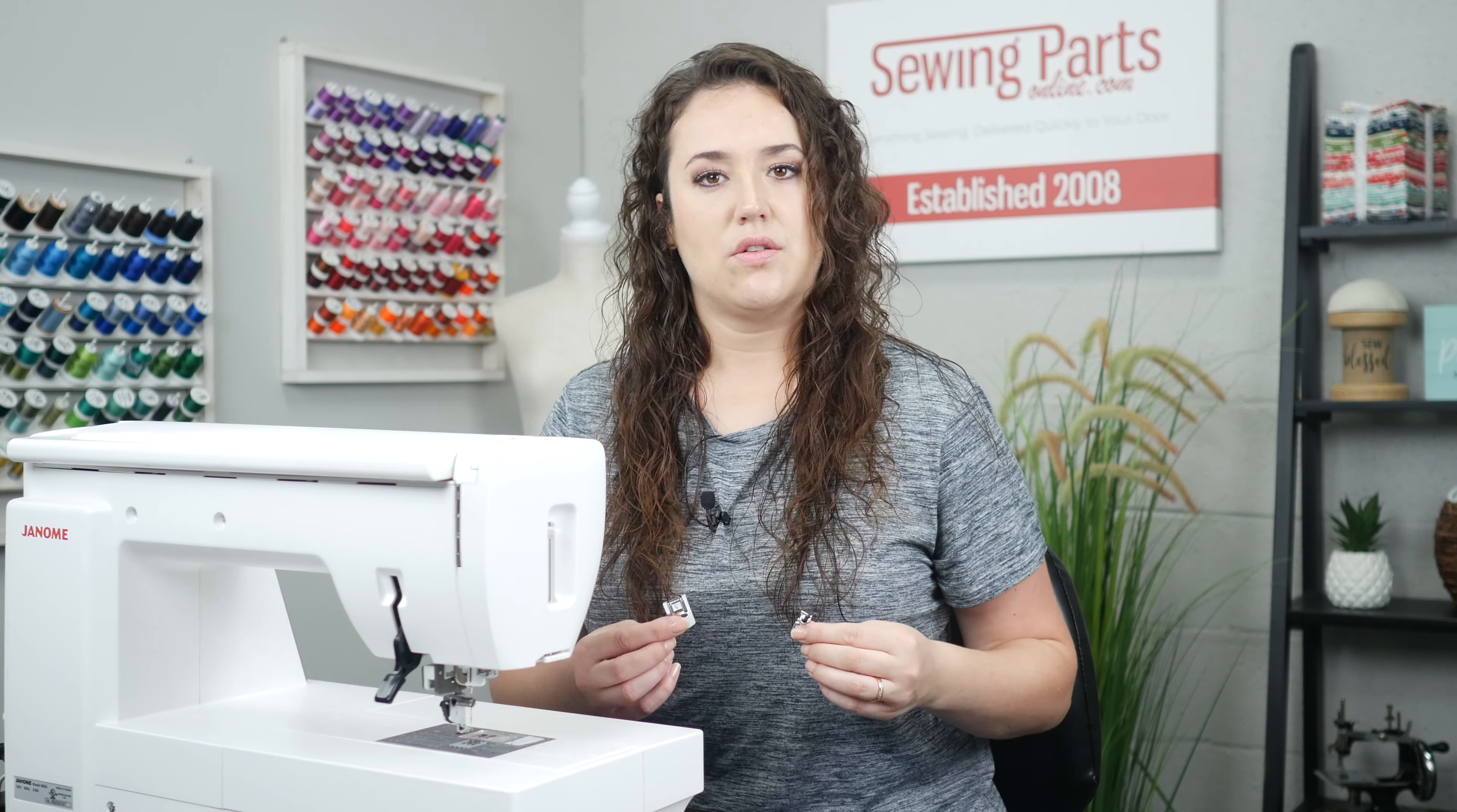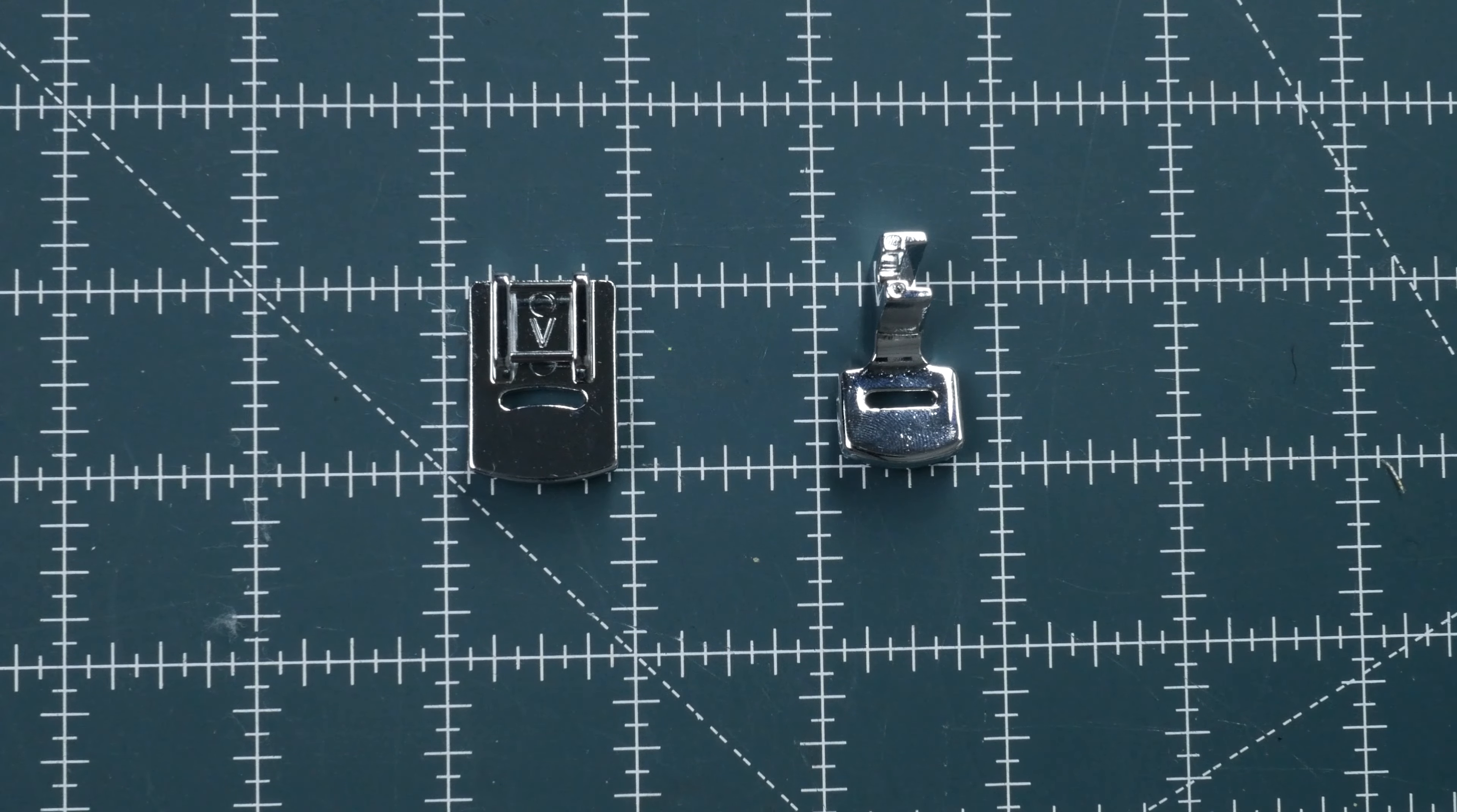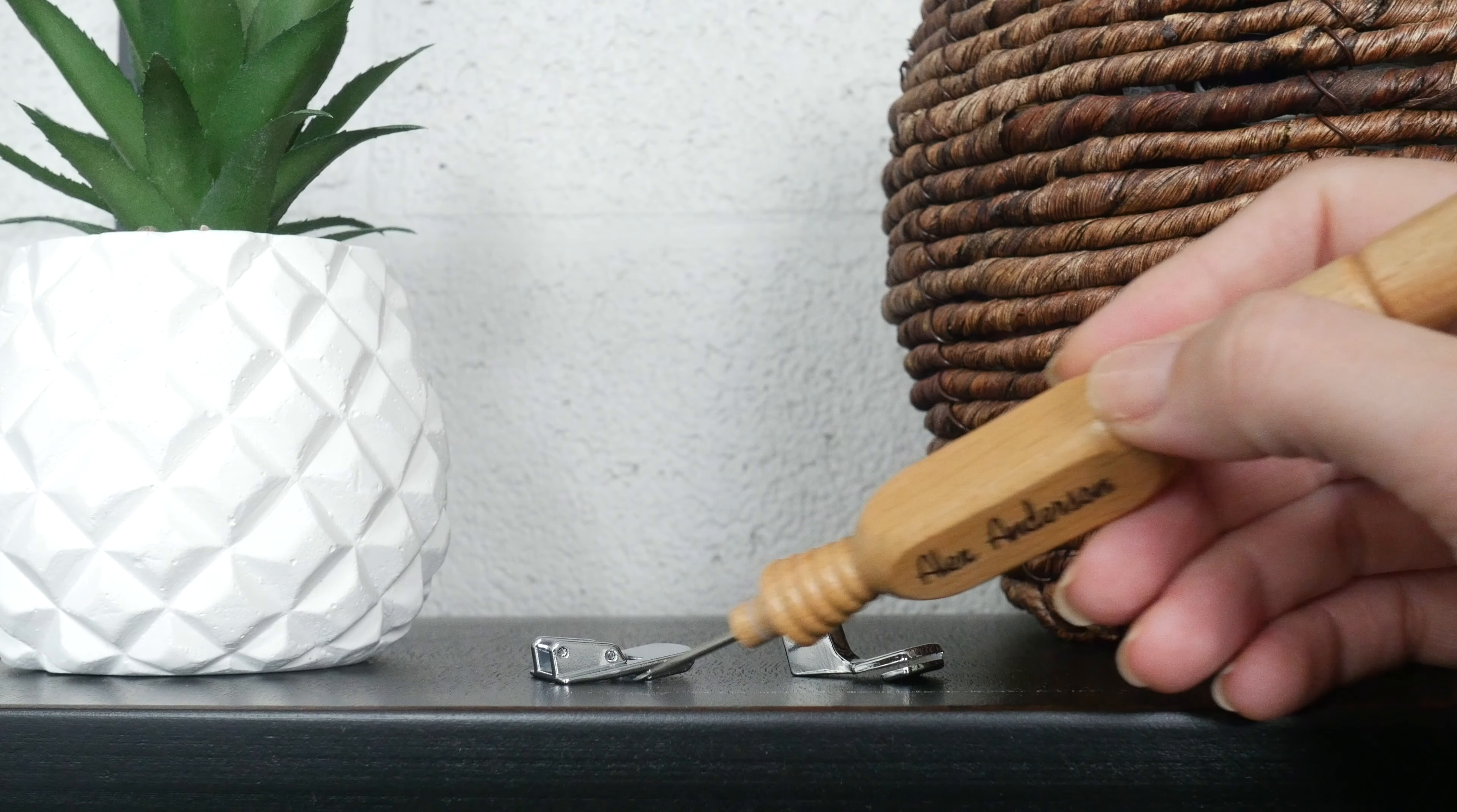Depending on the style of foot that you get, it can do a single layer or it can do a double layer. I grabbed a couple of different styles of gathering feet. As you can see, this one is a snap-on, whereas this other one is a low shank screw-on. Depending on your machine, the style and size can drastically change.